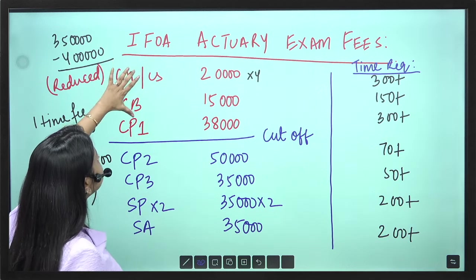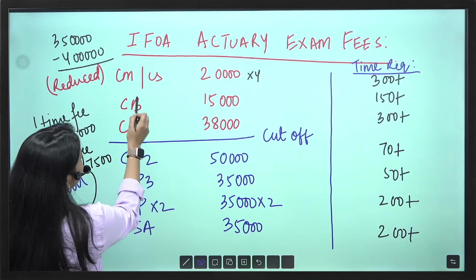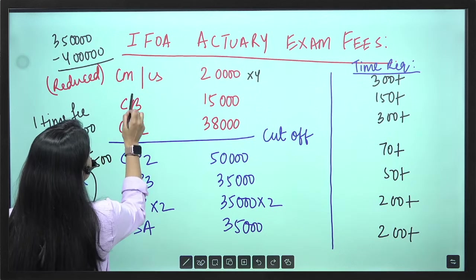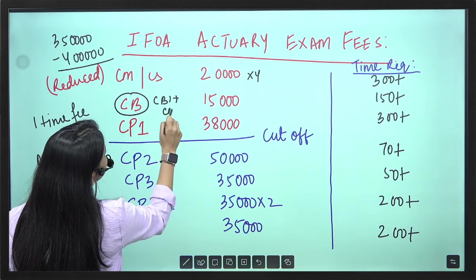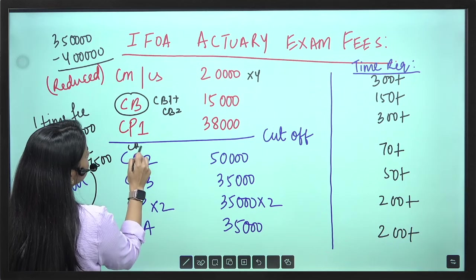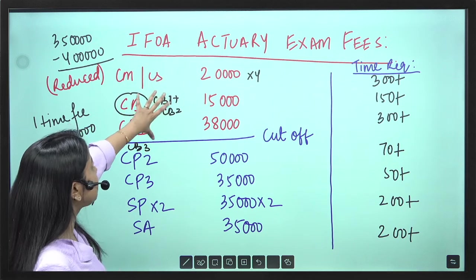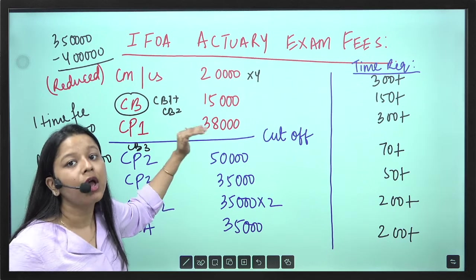Considering you are able to finish 7 plus 1, 8 exams. Some of them take CB3 exam. This CB1 plus CB2. Some of them take CB3 exam over here as well. So depending, we have taken that all the CB papers and CMCS and CP1 you are completing in your college.